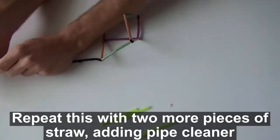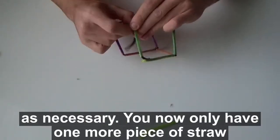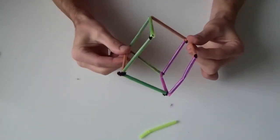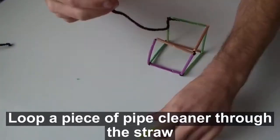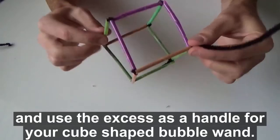Repeat this with two more pieces of straw, adding pipe cleaner as necessary. You now only have one more piece of straw that you need to add. Loop a piece of pipe cleaner through the straw and use the excess as a handle for your cube-shaped bubble.